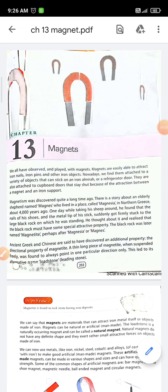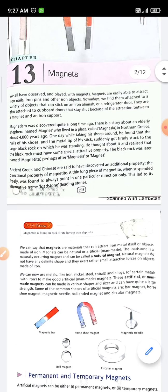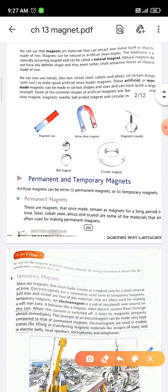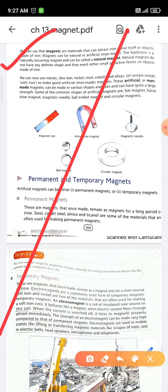Welcome students in our science class. Today we will discuss chapter number 13: magnets. All of us know about the interesting property of magnets, so let us start. Magnets are the materials that can attract iron metal itself or objects made up of iron.